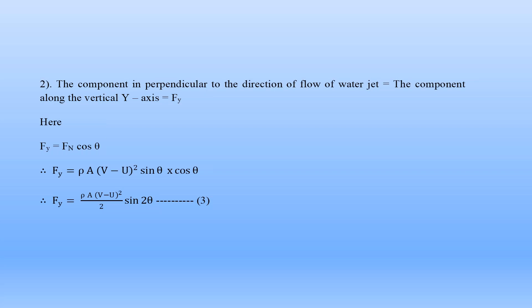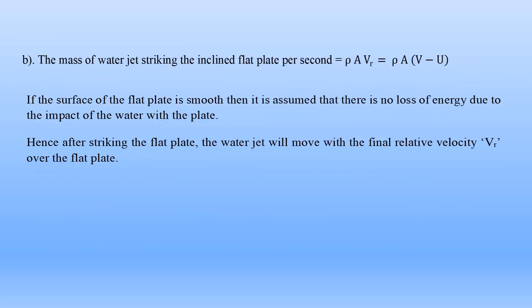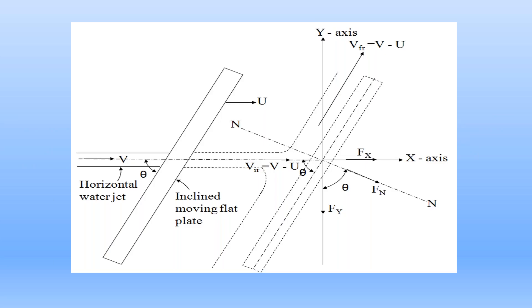The inclined flat plate is in moving condition, moving horizontally along the x-axis, and the water jet applies force Fx on this moving plate along the x-axis. So work is done by the water jet on the moving flat plate. According to the definition of work, work equals force times distance moved by the body. The work done by the water jet on the moving inclined flat plate equals Fx times the distance moved by the plate.